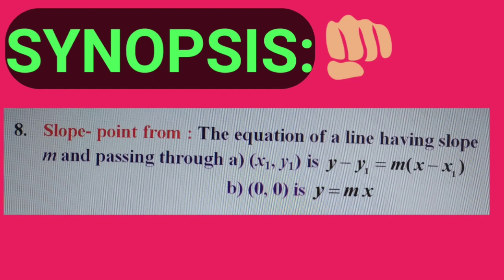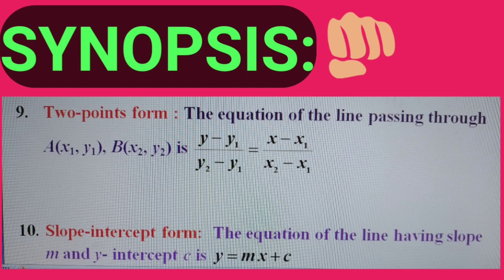If the line is passing through the origin, then y equals mx. Next: two-point form. The equation of the line passing through A(x1, y1) and B(x2, y2) is (y minus y1)/(y2 minus y1) equals (x minus x1)/(x2 minus x1). Slope-intercept form: the equation of the line having slope m and y-intercept c is y equals mx plus c.